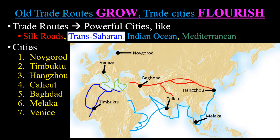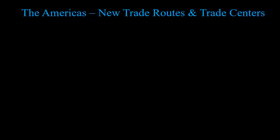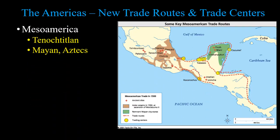You should know what areas of the world are linked together — East Africa gets linked to Southeast Asia because of the Indian Ocean. There are some new trade routes and centers during the post-classical period, but they're still pretty isolated. In Mesoamerica, you have the trading city-states and empires of Tenochtitlan, the Mayans, and the Aztecs.